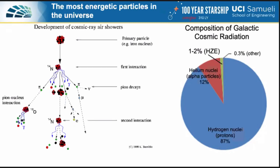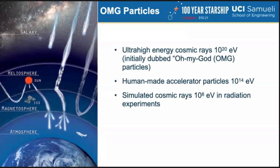Galactic cosmic ray nuclei span a wide range of energy and therefore the ability to transfer that energy. The major components of galactic radiation are hydrogen and helium nuclei, while the remaining one to two percent of particles have atomic charges ranging from Z=3 (lithium) to Z=28 (nickel). These are called HZE — high Z and high energy particles — such as iron, which has a charge Z of 26. They are particularly challenging because they cause the most damage. Because they are charged particles, they are affected by magnetic fields, and many are deflected by the heliosphere and the magnetosphere.